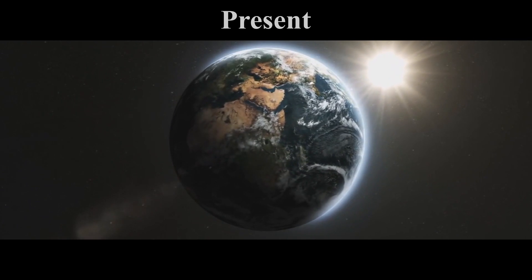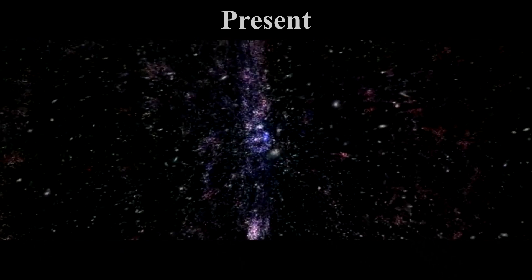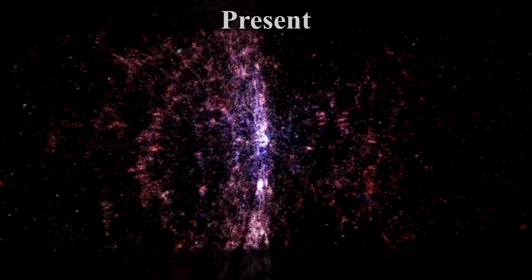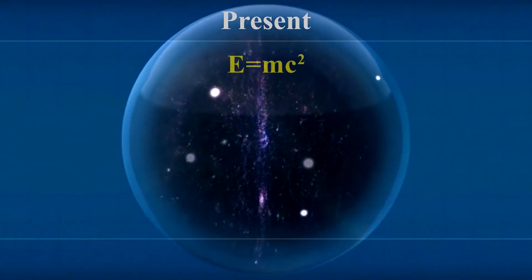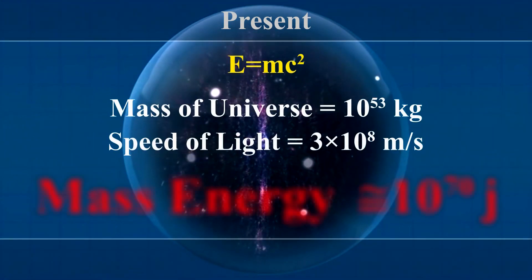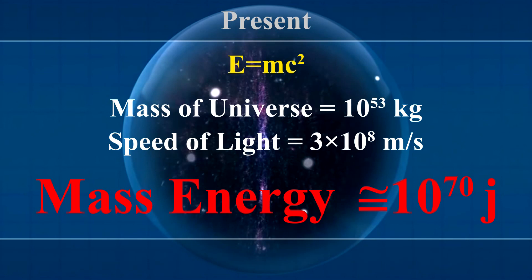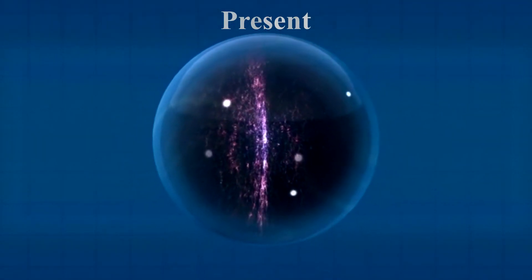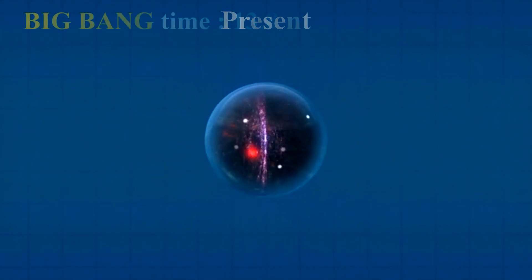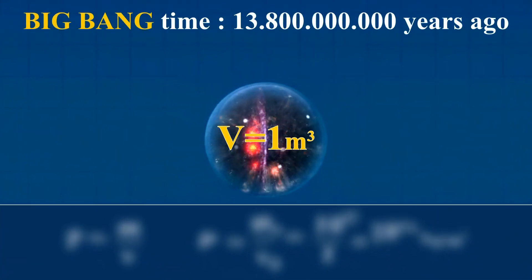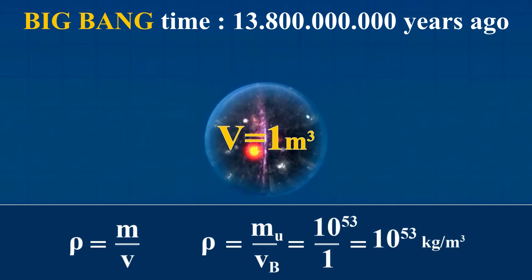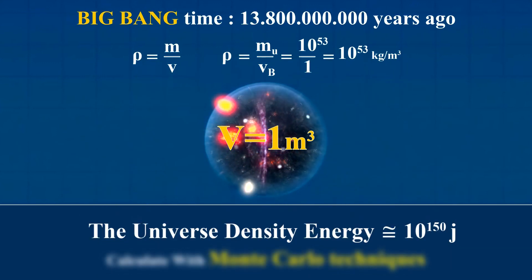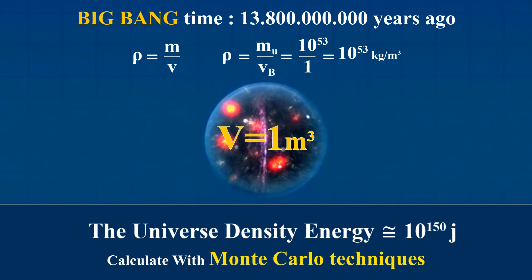Observations since the 1990s indicate that the universe is expanding at an accelerating rate, and dark energy is the most accepted hypothesis to explain this. The energy of the universe according to mass-energy equivalence is approximately 10 to the power of 70 joules. At the Big Bang, suppose the universe was a neutron star with a volume of approximately one cubic meter, giving a density of 10 to the power of 53 kg/m³. Therefore, according to the Monte Carlo method, the energy of this sphere equals 10 to the power of 150 joules.